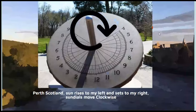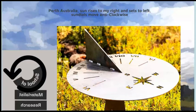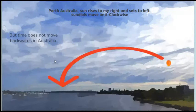But if we move to Perth, Australia, the sun rises on my right and sets to my left. And sundials, Australian sundials move anticlockwise. It's not so easy to see here, but here's an Australian sundial set to point to the south. And as the day moves, the shadow is going to move from three o'clock to four o'clock, moving in an anticlockwise direction, reverse direction. But time doesn't move backwards in Australia.